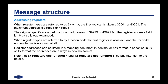When register types are referred to by function code, the first register is always 0 and the 3x or 4x nomenclature is not used at all. This is a big deal with Modbus — do you start the addressing at 0 or 1? If it is referred to starting at 0, or using the function code, you will start at 0. Register addresses can be listed in a mapping document in decimal or hexadecimal format. If specified in 3x or 4x format, addresses are always in decimal format — so the address would list as 40001 instead of as 0.